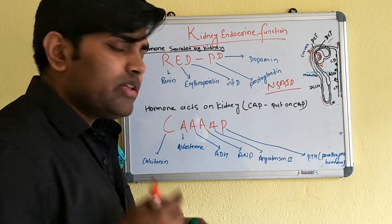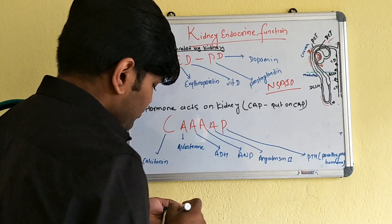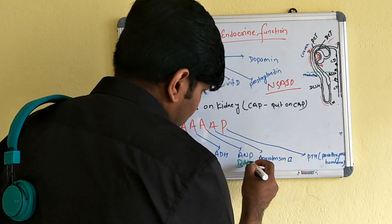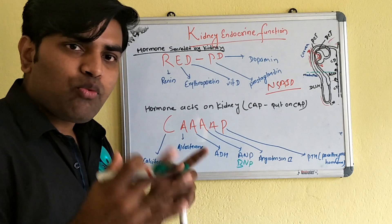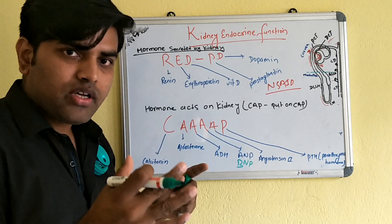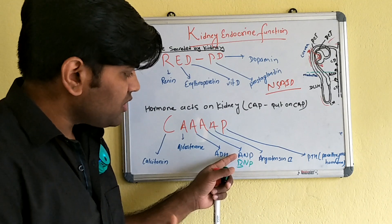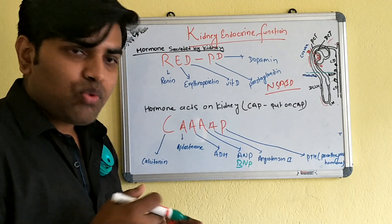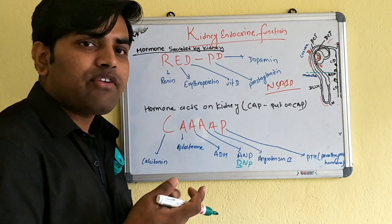ANP (atrial natriuretic peptide) and BNP (B-type natriuretic peptide) are hormones released from the heart. ANP is released from the atria and BNP from the ventricles when there is volume overload that stretches the heart walls. When the atrial wall is stretched, ANP is released; when the ventricular wall is stretched, BNP is released. These act on the kidney to increase GFR and filtration fraction.